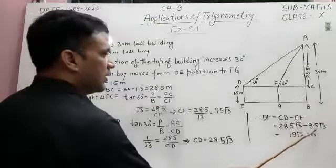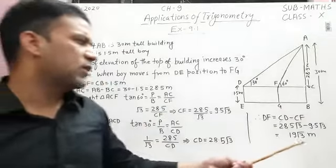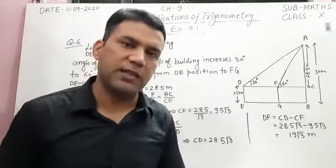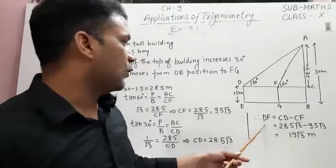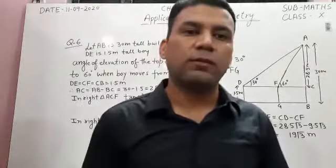The value of CD, 28.5 root 3, minus the value of CF, 9.5 root 3, that is 19 root 3 meters. You can also put the value of root 3, that is 1.73, and obtain the value of DF in decimal.